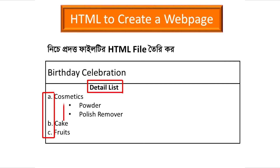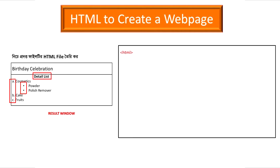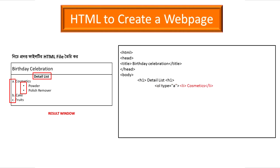The first one shows the details. The title is the first part. This is the detail list and also the ordered list. The list is cosmetics. The UL type is called disc — we normally call it disc.